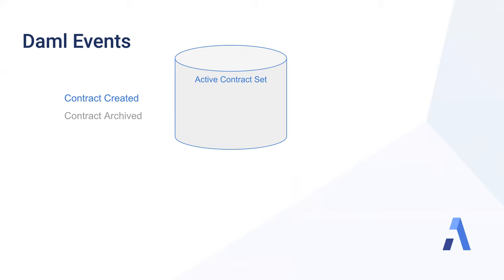Now let's talk about the format of DAML commands. In DAML, we don't need to explicitly specify which contracts should be archived and which should be created in every transaction. In DAML, we have two main types of commands: we can request to create a contract, and we can request to exercise a choice on a contract which already exists in the active contract set. If the command is accepted, events will be recorded and the active contract set will change.